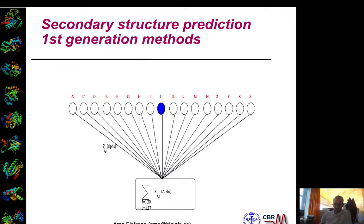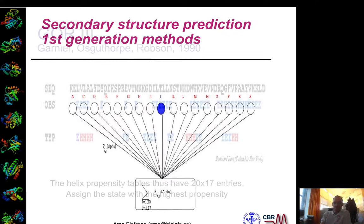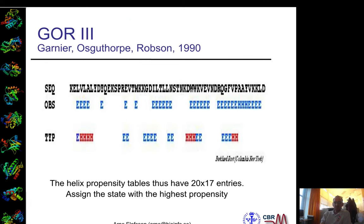So you end up with three values: one for being in a helix, one for being in a sheet, and one for being in a loop region. This gives you a prediction like that.